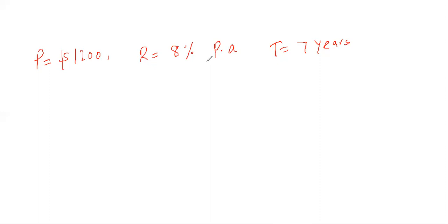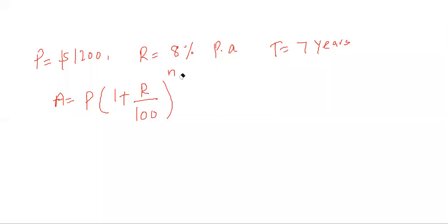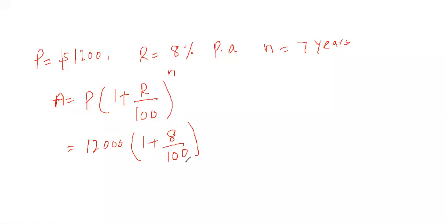Eight percent per annum compound interest — remember, it's not simple interest. Compound interest means profit on profit. The formula is: A equals P into 1 plus R over 100, raised to the power N, where N represents the number of years. Plugging in values: 12,000 into 1 plus 8 over 100, to the power 7. Do not write an extra 100 — the percent is already accounted for in the formula.